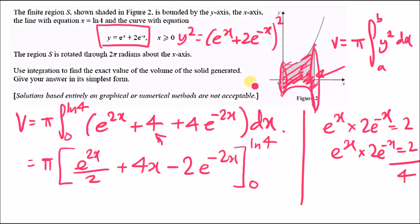Now plug in values. Substituting x = ln(4) into the first term: e^(2·ln4)/2. Since 2·ln(4) = ln(4²), e^(2ln4) = 4² = 16, so 16/2 = 8. For the second term we get 4·ln(4), and for the third term, substituting x = ln(4) into −2e^(−2x).